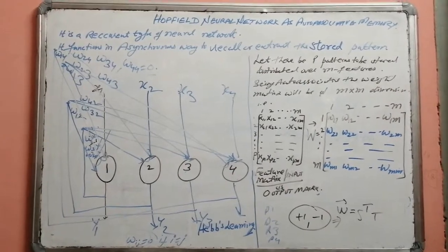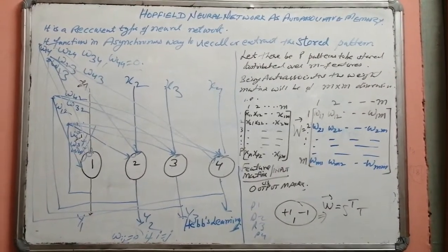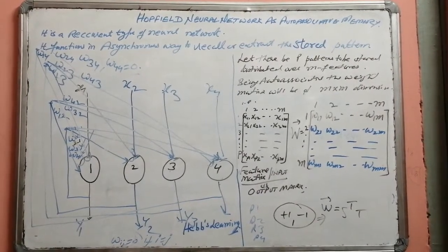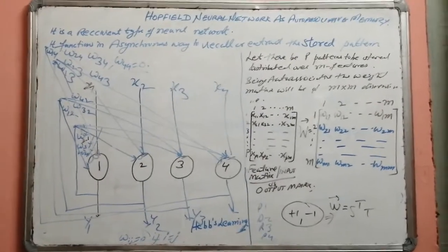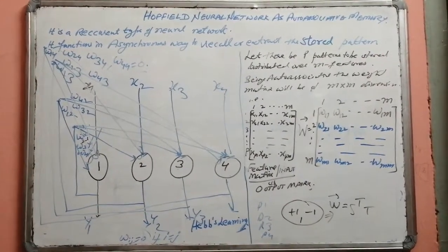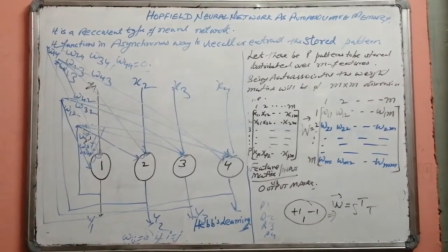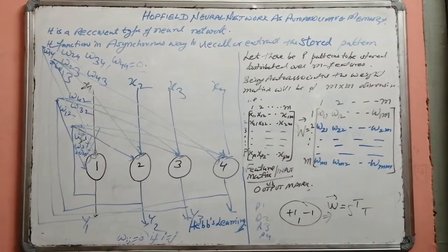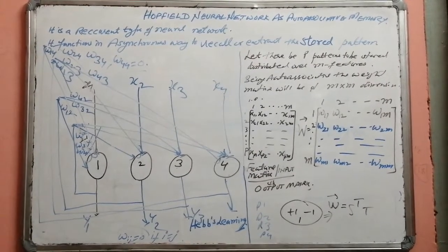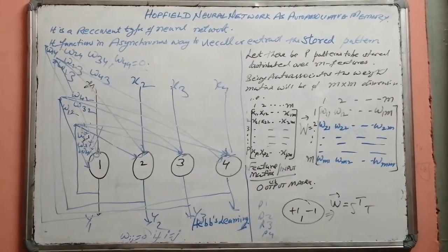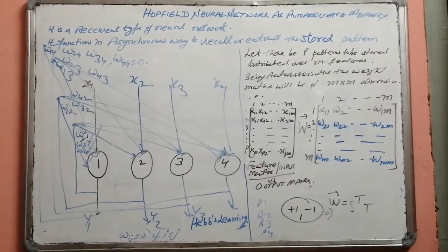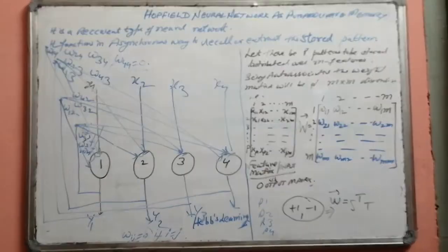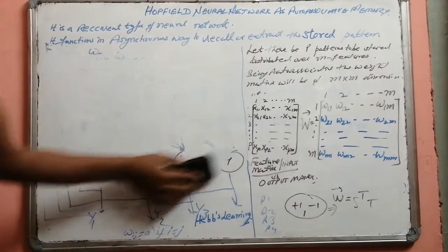Now suppose we want to test whether our network is working fine. Suppose instead of the full four-feature pattern, only two features are presented to the network. Logically, the pattern most similar in those two features should be returned as output. The testing procedure of the Hopfield neural network is different from what we have seen before — let us look at the difference.